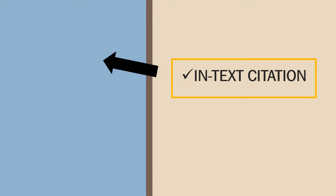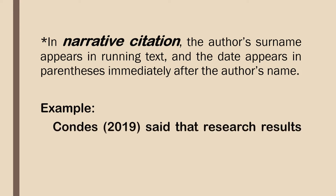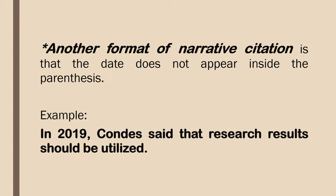In-text citation may be narrative or parenthetical. In narrative citation, the author's surname appears in running text and the date appears in parentheses immediately after the author's name. For example: Candesc (2019) said that research results should be utilized. As you see, Candesc (2019) is part of the running text. Another format of narrative citation is when the date does not appear inside parentheses — for instance: In 2019, Candesc said that research results should be utilized. Here, the author and the date are incorporated into the text.